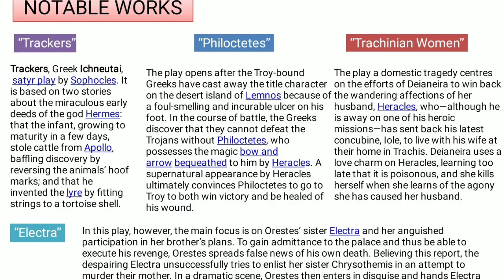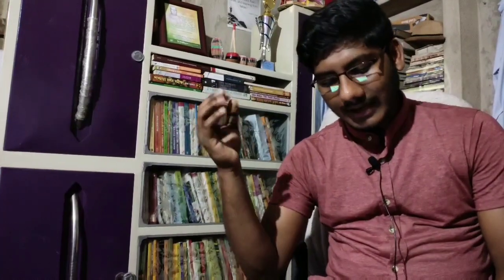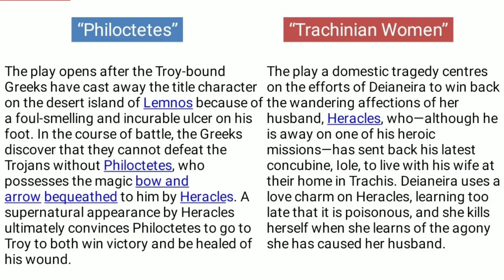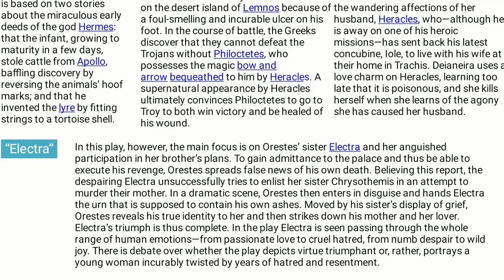He, with Aeschylus and Euripides, is called one of classical Athens' three great playwrights. Sophocles was the younger contemporary of Aeschylus and the older contemporary of Euripides. If we talk about his notable works, he wrote works like Trackers, Philoctetes, Trachiniae Women, Electra.